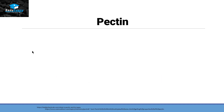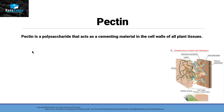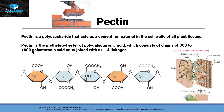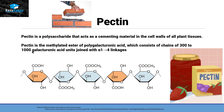Pectin is a polysaccharide that acts as a cementing material in the cell wall of plant tissues. It is the methylated ester of polygalacturonic acid, consisting of chains of 300 to 1000 galacturonic acid units joined by alpha 1,4 glycosidic linkages. Pectin is commercially present in jams and jellies as a preservative to provide stiffness or gel-like texture.